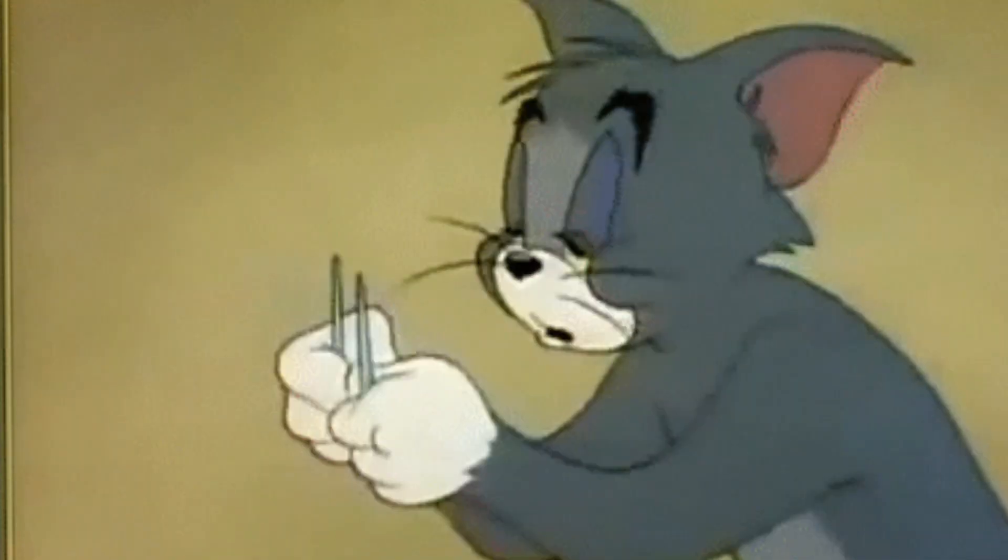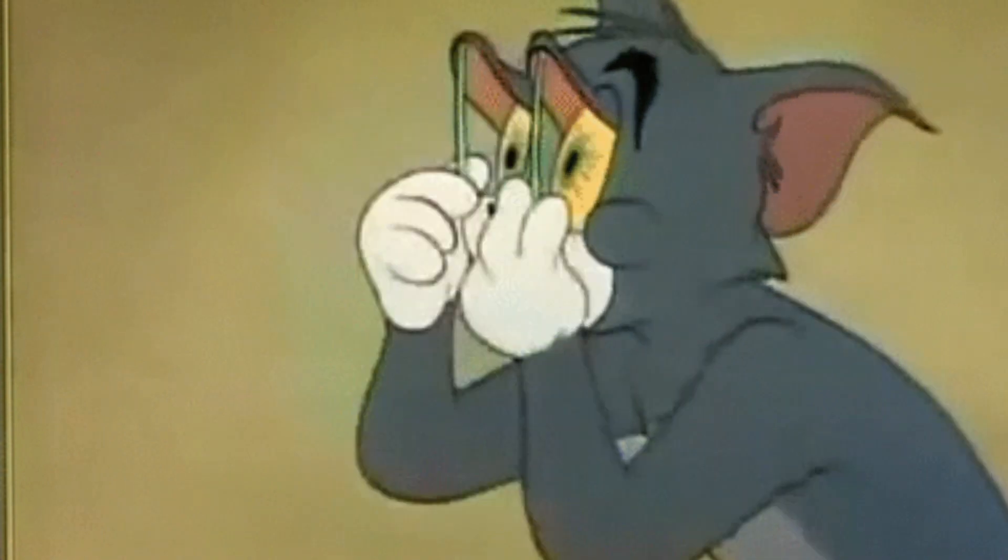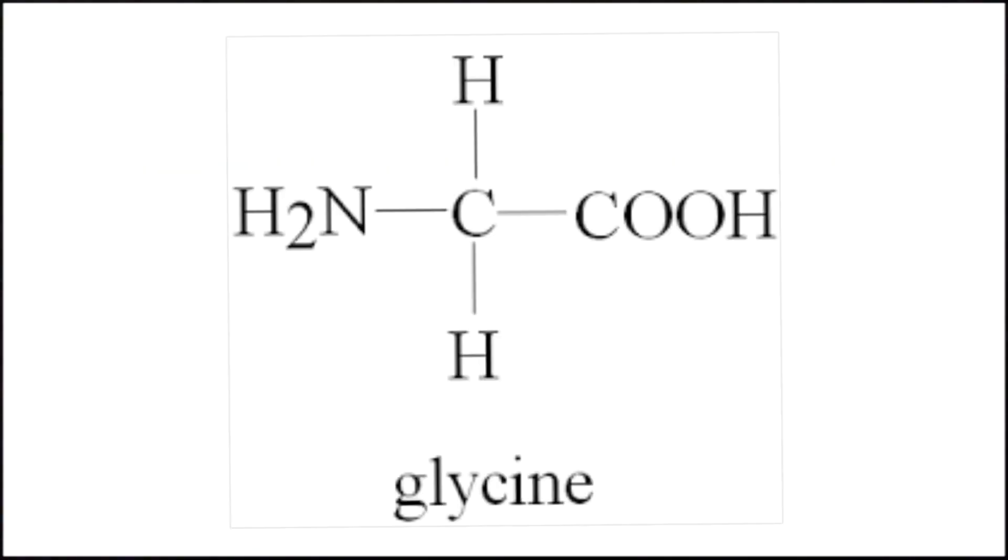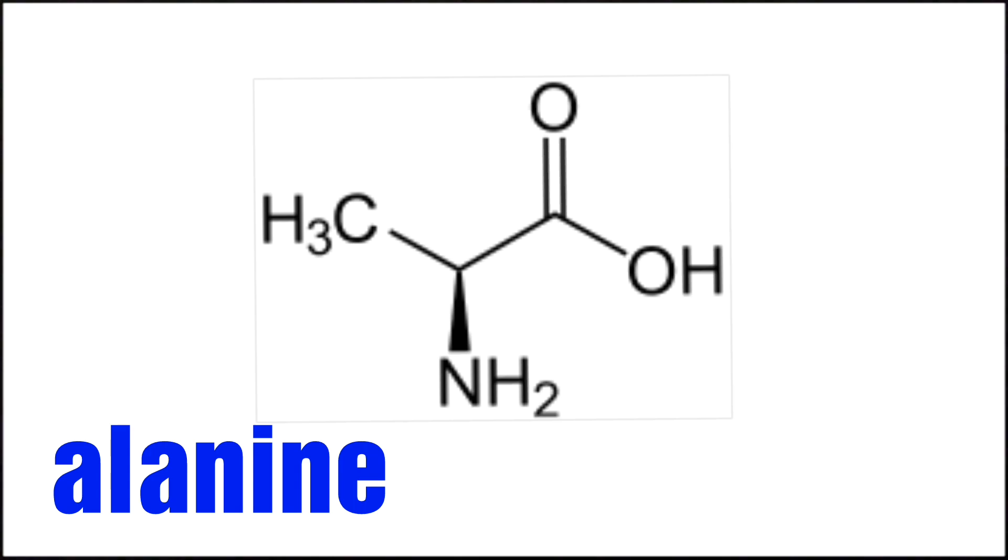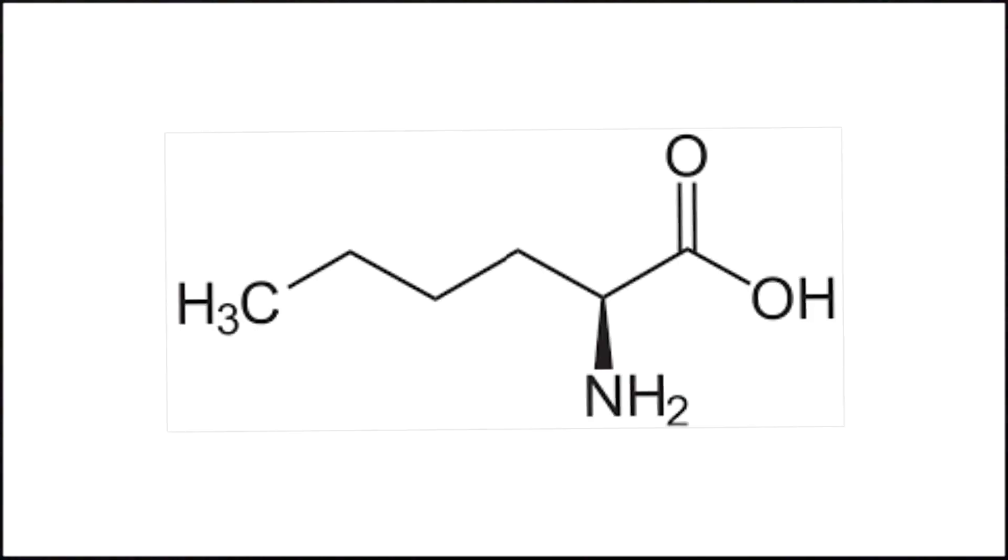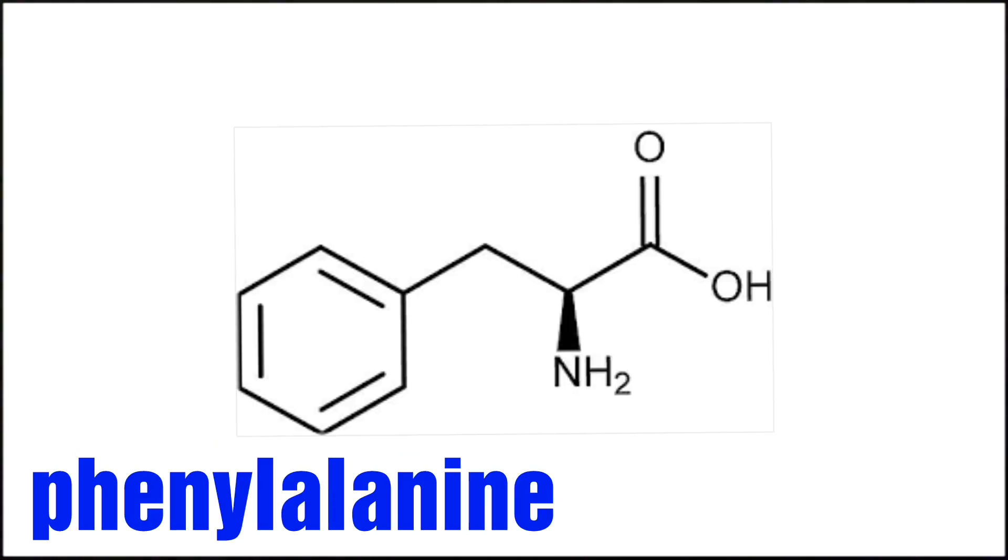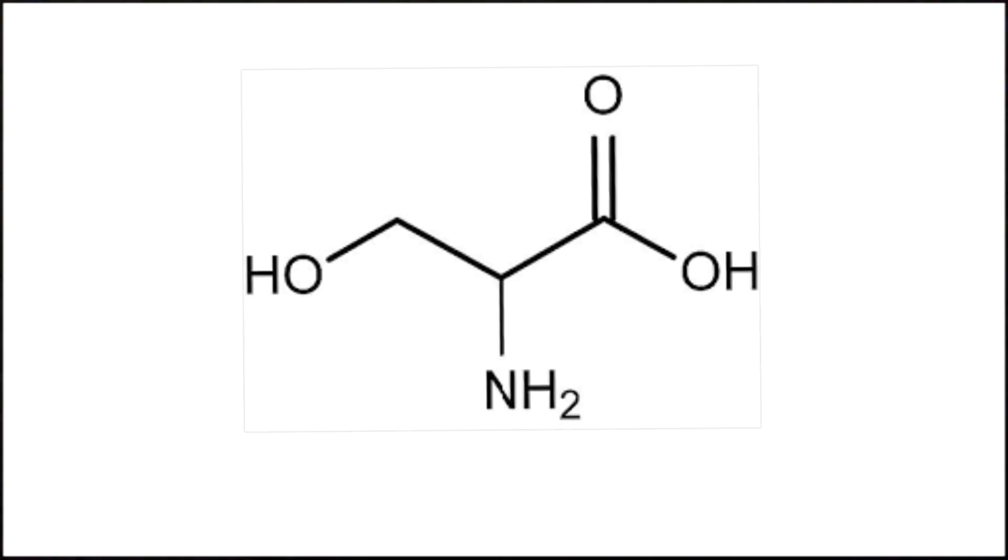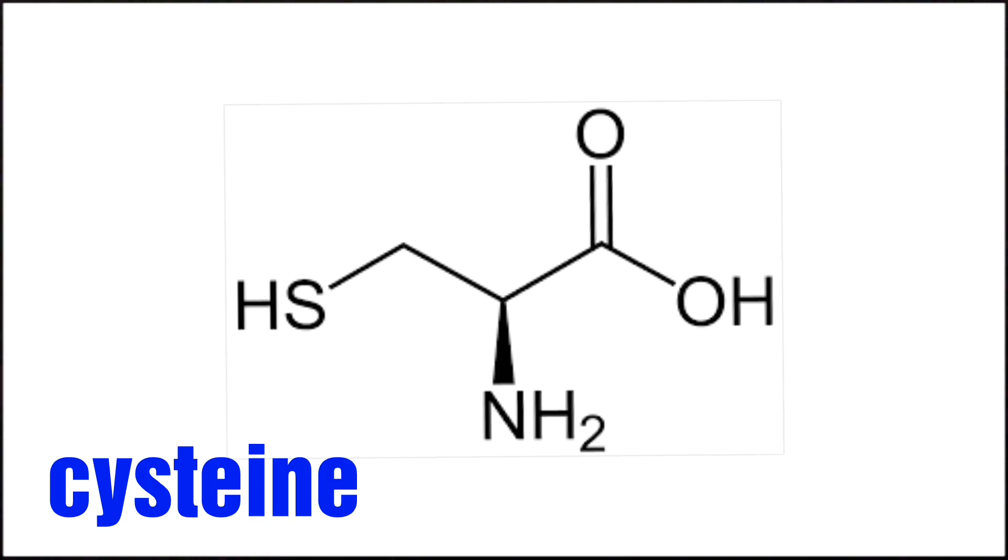You need to memorize the structures of the following amino acids. The first being neutral amino acids: glycine, alanine, valine, leucine, isoleucine, norleucine, phenylalanine, tyrosine, and cysteine.